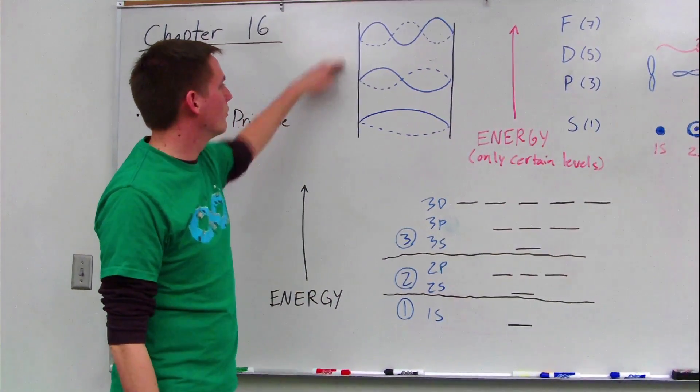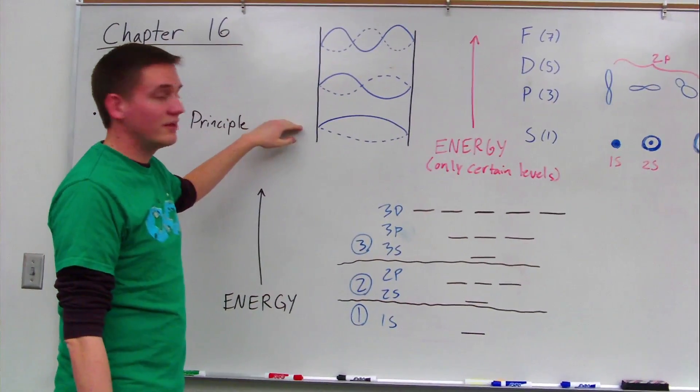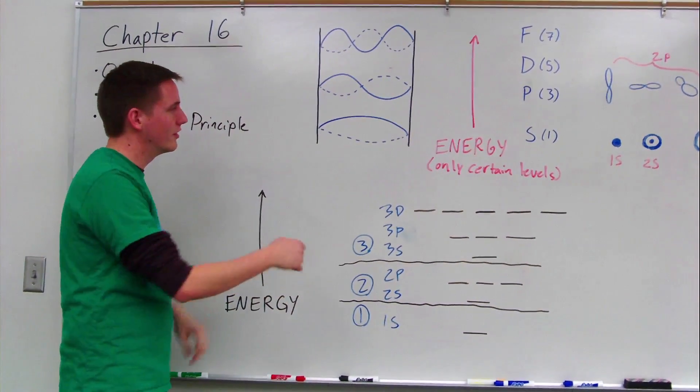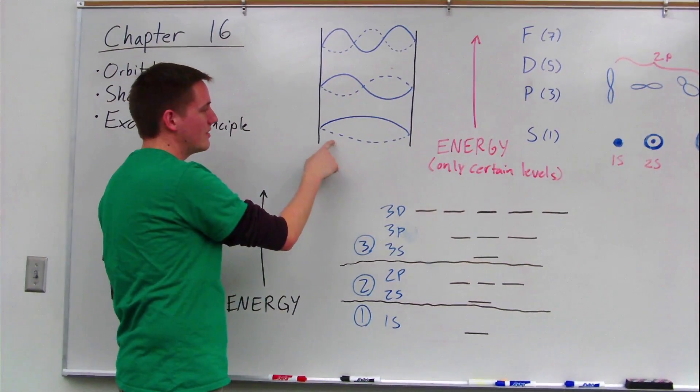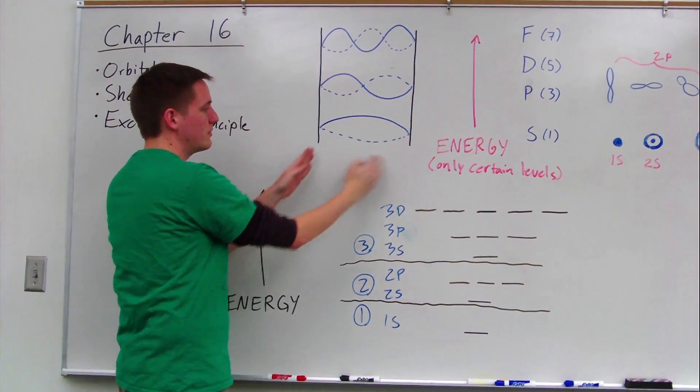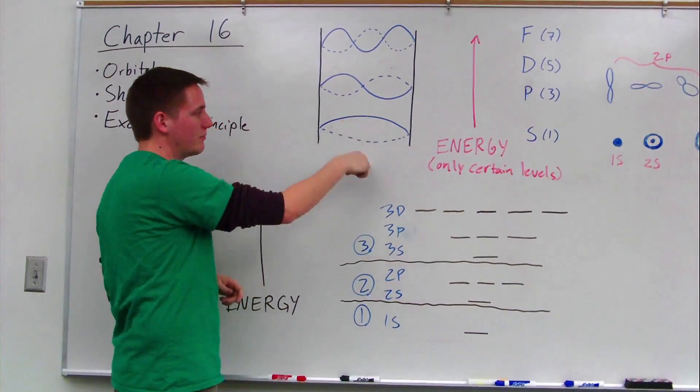So to start, we're going to look back and remember standing waves that we learned about earlier in this unit. Standing waves, remember, you can do with the telephone cord and make these shapes. This is the lowest energy shape that we can do with the space that we have here, just going back and forth, up and down.